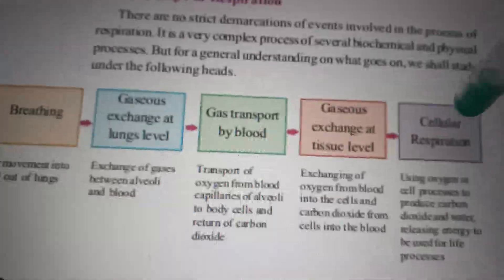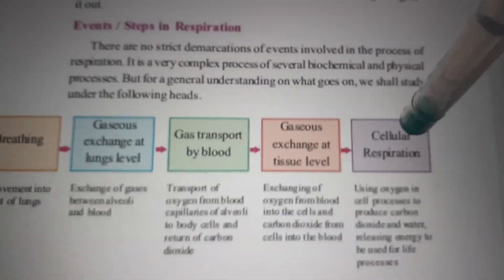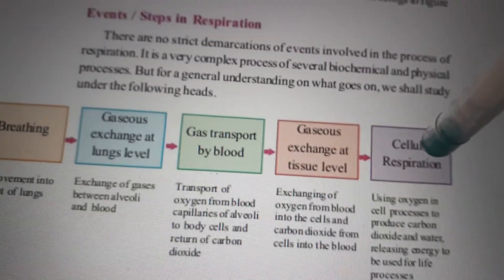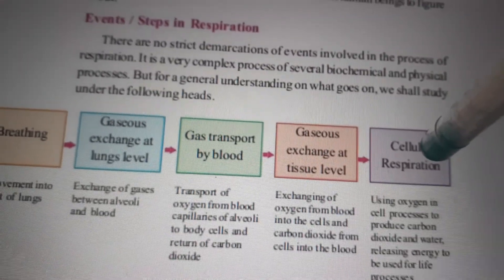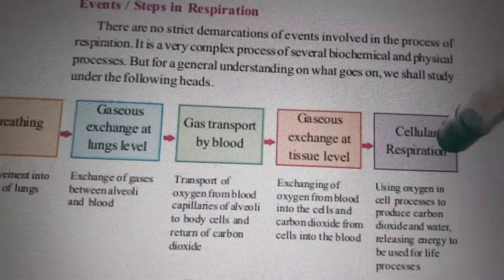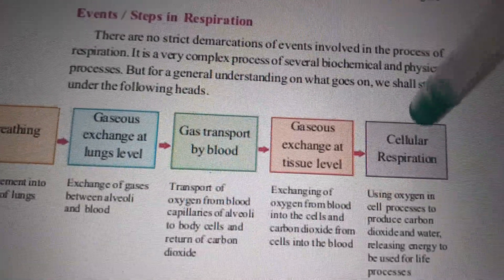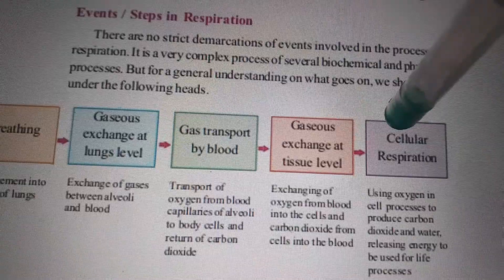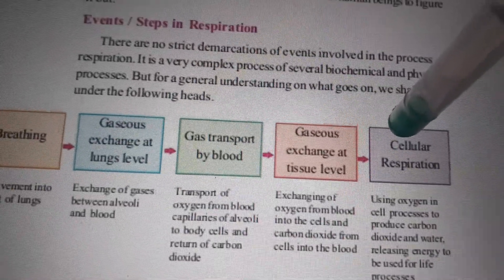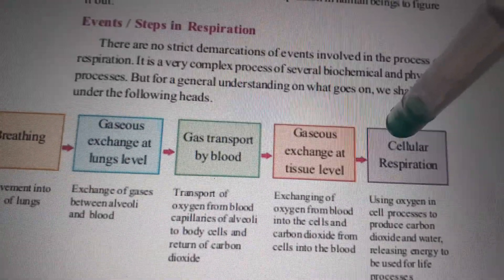The fourth step involves oxygen being carried from the nostrils through the blood up to the cell level. Here in the fourth step, under cellular respiration, through the mitochondria, cellular respiration is carried out.